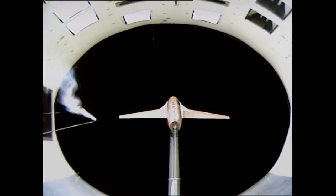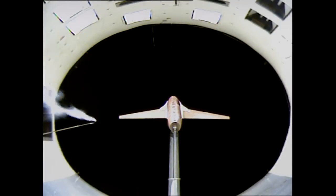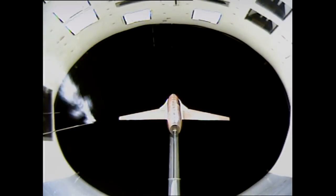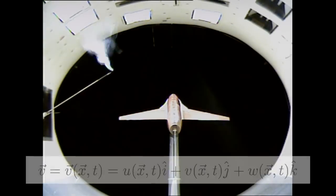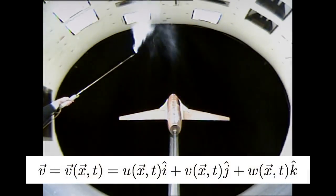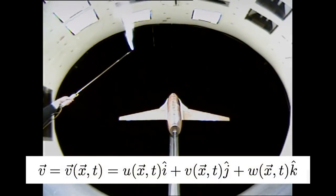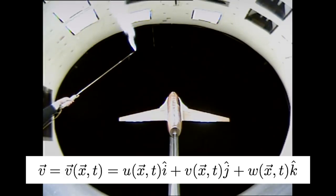Now let's increase the angle of attack to about 25 degrees. At this angle of attack, we will see that the smoke lines in some regions will no longer be fixed in time, even though the probe location is fixed. This indicates that the velocity vector field is time-dependent — in other words, V is a function of x and t.